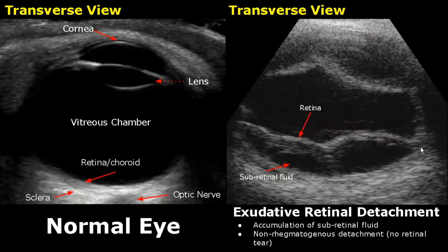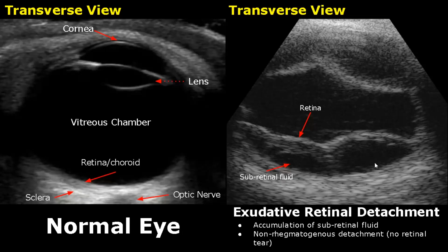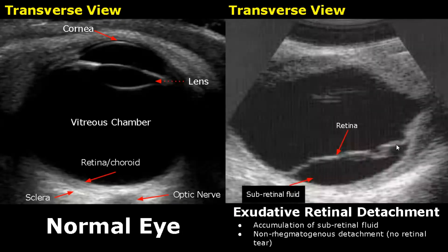Exudative retinal detachment is a non-rhegmatogenous detachment — no retinal tear occurs. We do not see any holes or tears in the retina. Due to inflammation or tumor, there is accumulation of sub-retinal fluid which separates and lifts the retina from its original location. Here is another image of an exudative retinal detachment with no tear present and accumulation of sub-retinal fluid.